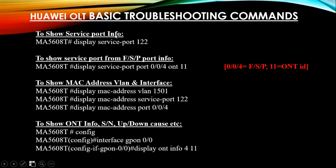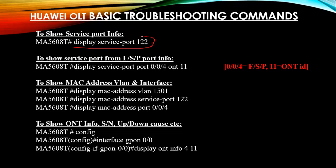To display service port status, use the command 'display service port 122'. This shows your ONT service port. To show service port from a specific port, if you have a port but don't know your service port, use 'display service port port' then the port FSQ and ONT ID.